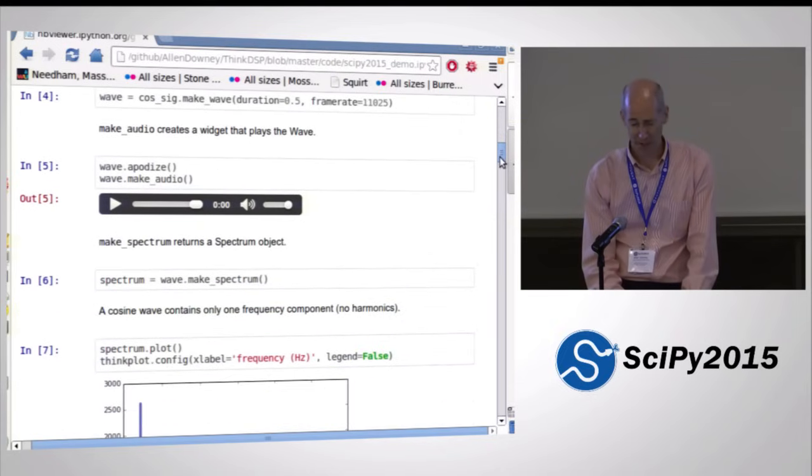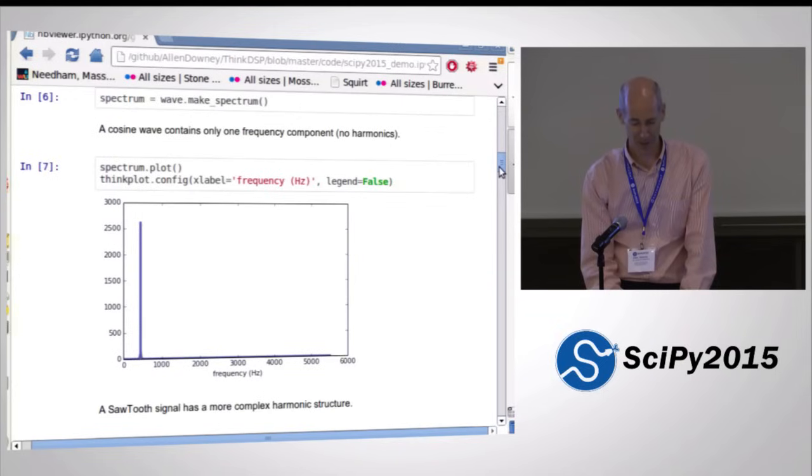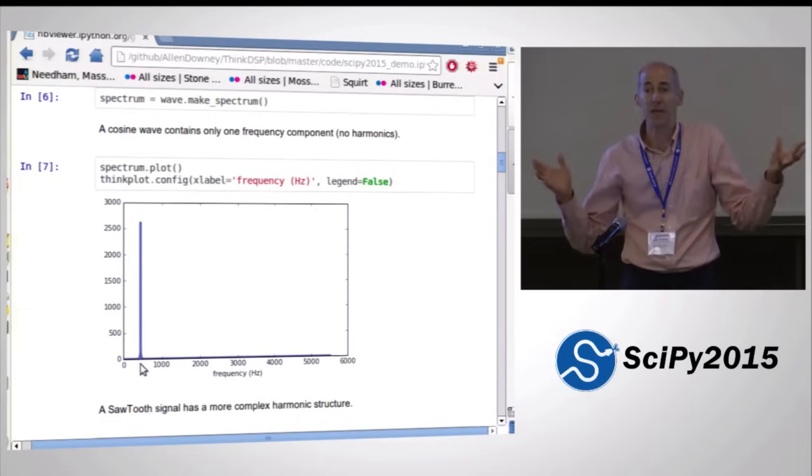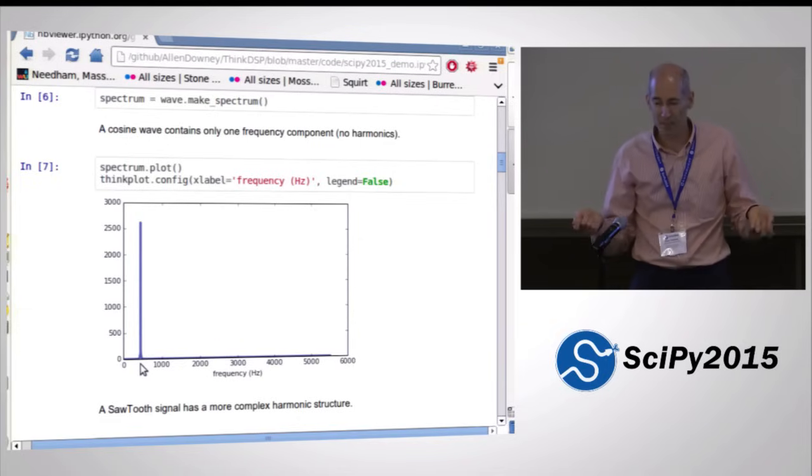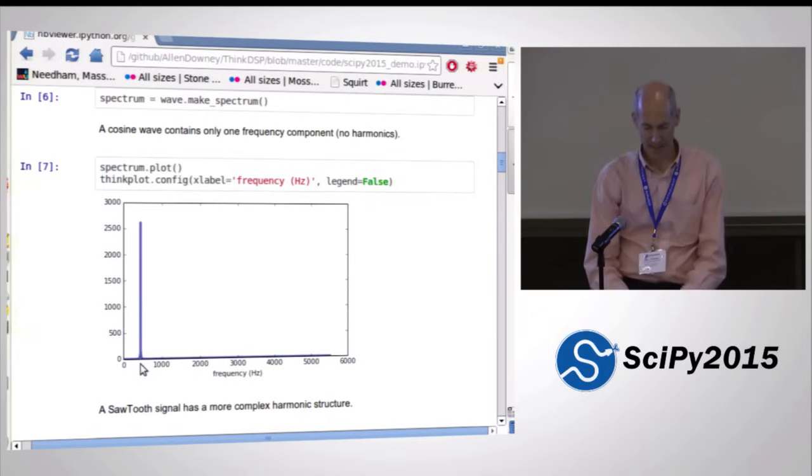Now you can make a spectrum of that, and if you're familiar with spectral analysis, you probably know that the spectrum of a sine wave is just a single frequency component at 440 hertz, which is right there. And now, instantly, you've played with a couple of classes in Python, but you get a general idea of what spectral analysis is about.